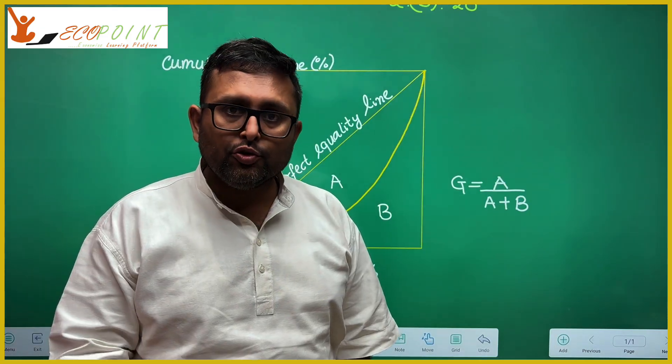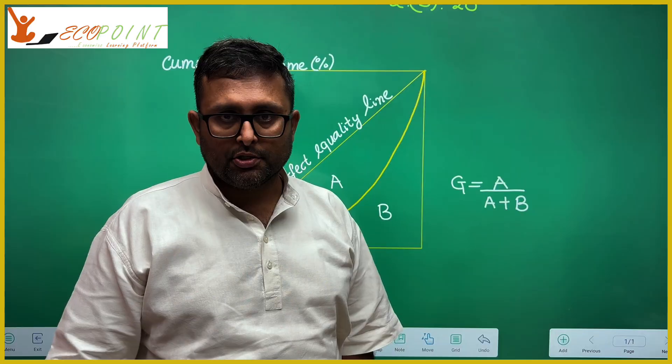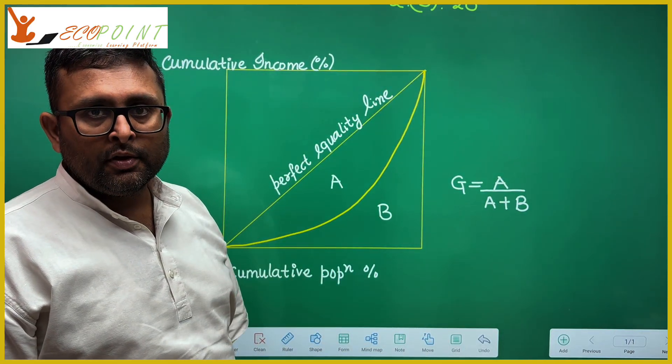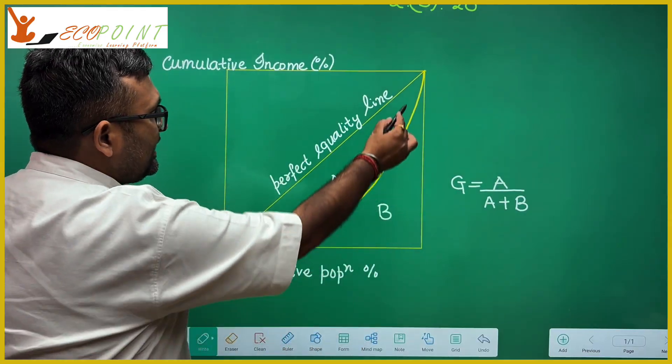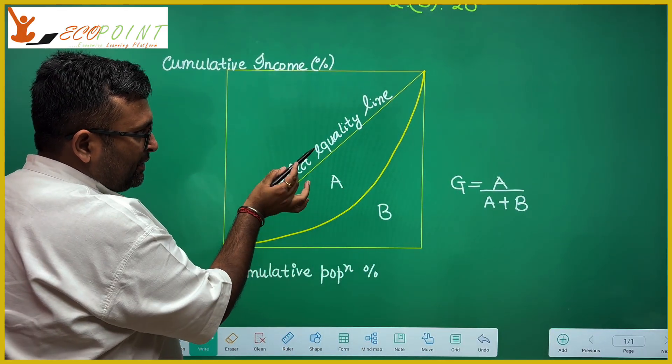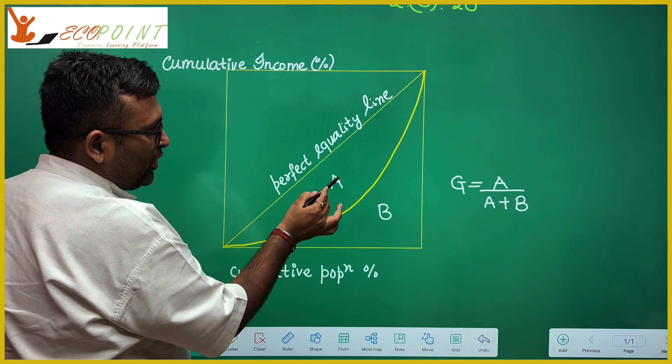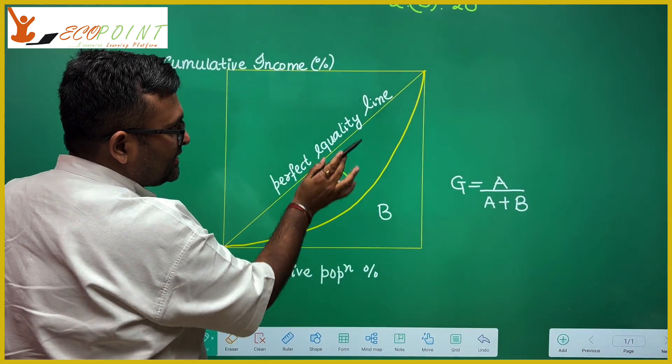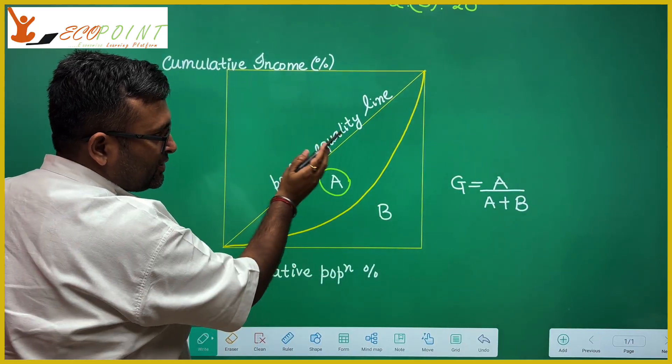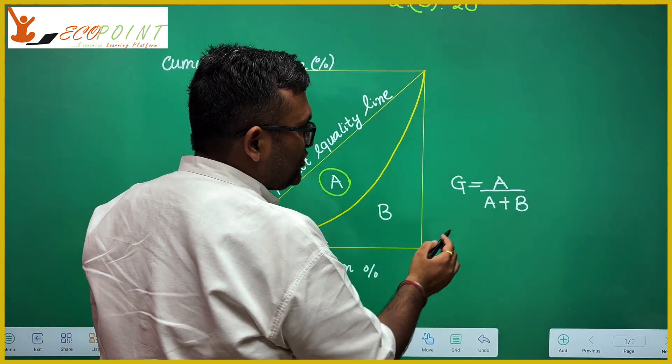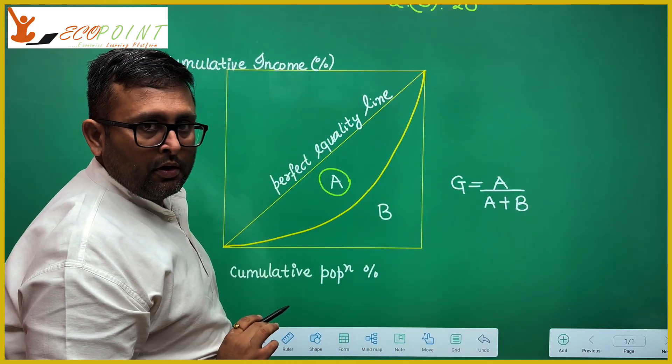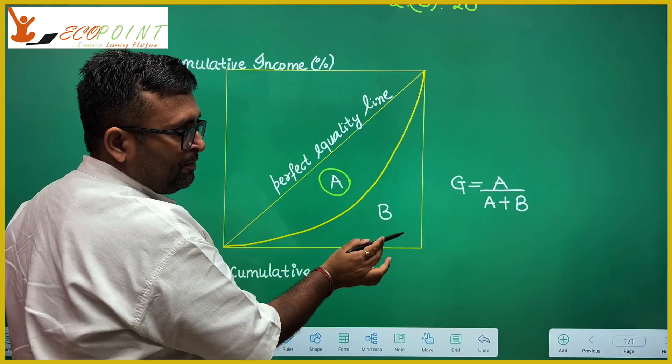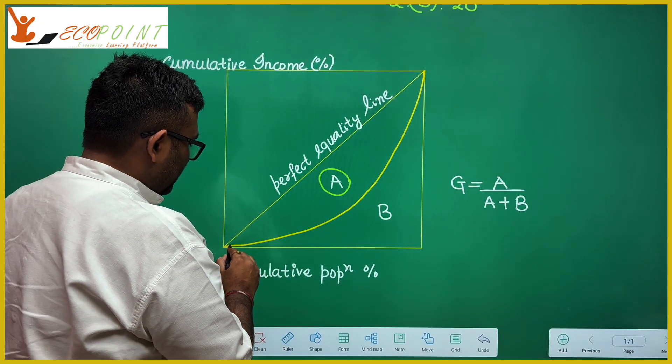So we can also use Lorenz curve to calculate Gini coefficient. So I hope you remember that this is the line of perfect equality, and this guy is the Lorenz curve. So the distance between the line of perfect equality and Lorenz curve is what A is. And this total distance between the perfect equality line, this total area is A plus B. So Gini coefficient is A upon A plus B. So you can calculate this area upon A plus B.